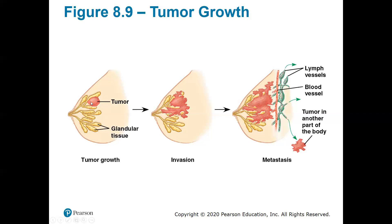If you can catch it at the early lump stage, that would be great. But sometimes people may not know and it can invade the surrounding tissue. Unfortunately, when cancer becomes very large or gets near the blood vessel system or lymph vessels, some of these cancer cells can break apart and travel through the bloodstream. This is metastasis — where the cancer has metastasized and can travel to different parts of the body.